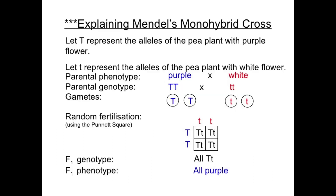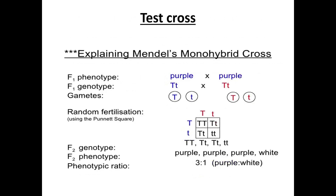Explaining Mendel's monohybrid cross: let T represent the allele for purple flower and t represent the allele for white flower. The parent phenotype is purple × white, and the parental genotype is TT × tt. The gametes are T and t. After random fertilisation using the Punnett square, you get all Tt offspring — 100% purple. If you cross Tt × Tt, you get TT, Tt, Tt, tt — giving a 75% chance of purple and a 25% chance of white.